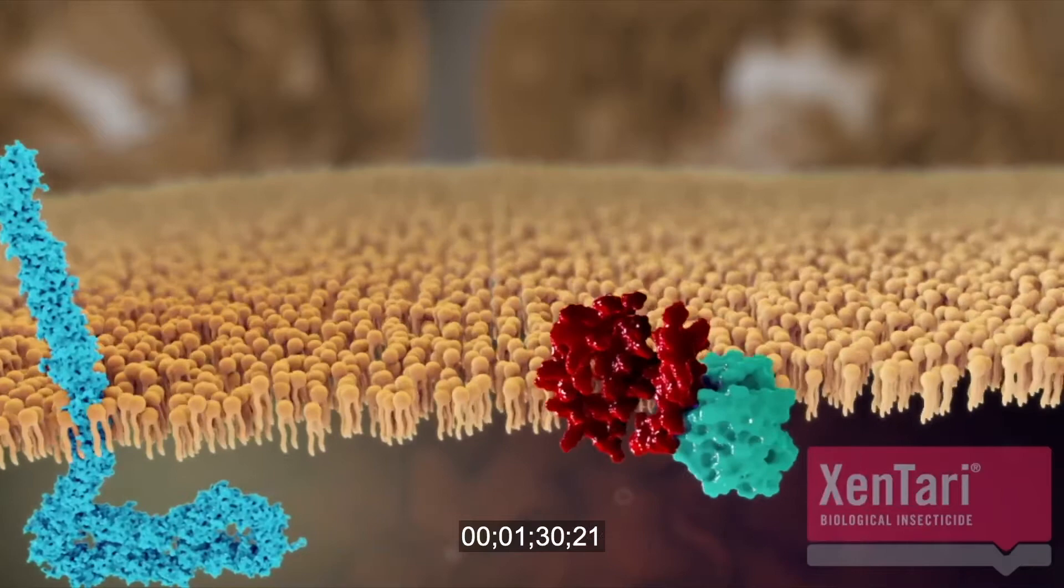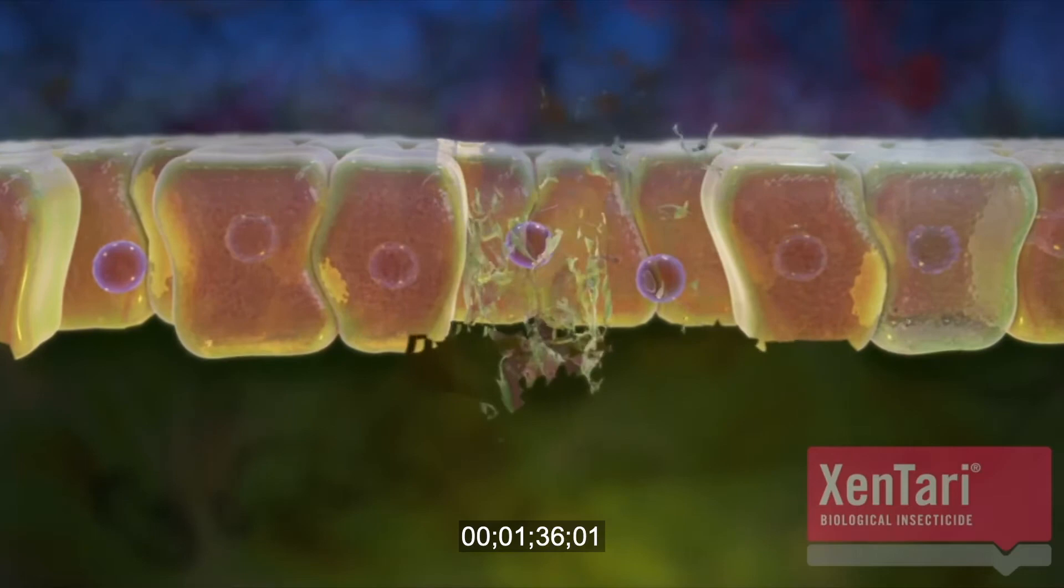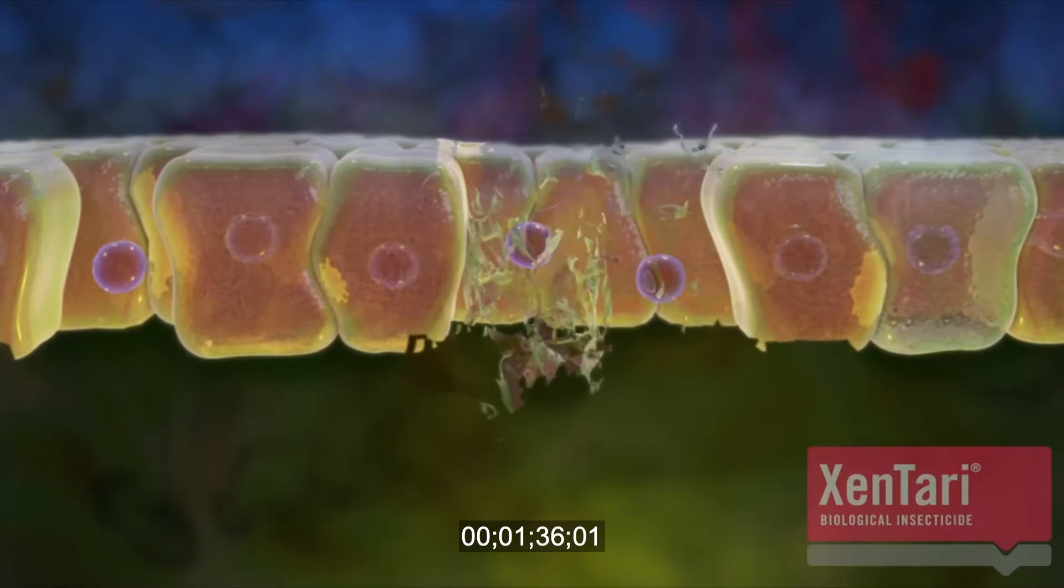Pore formation increases permeability of the midgut lining, allowing viable spores and gut microbes to invade the insect body, causing sepsis and death.